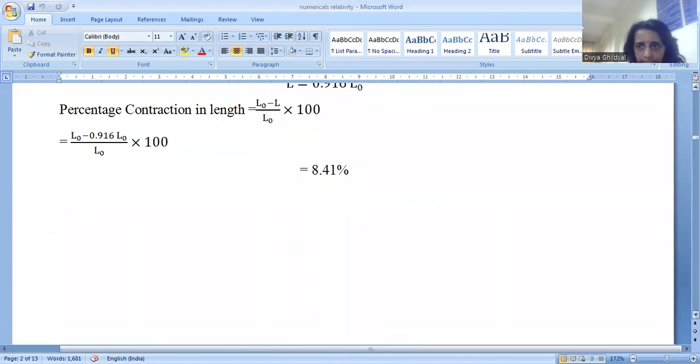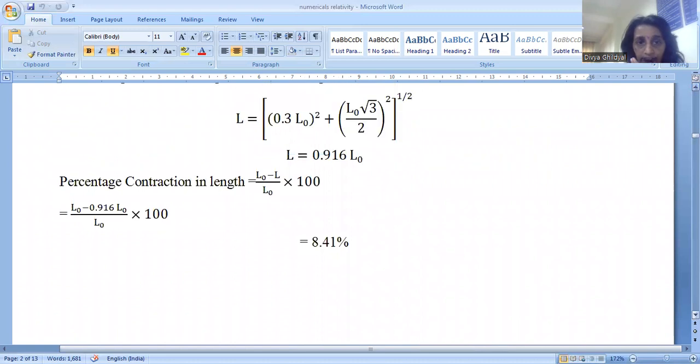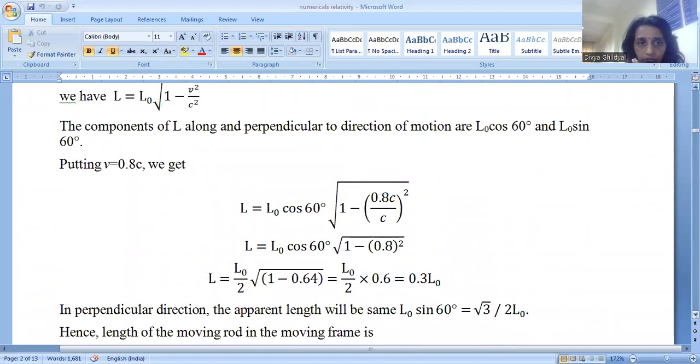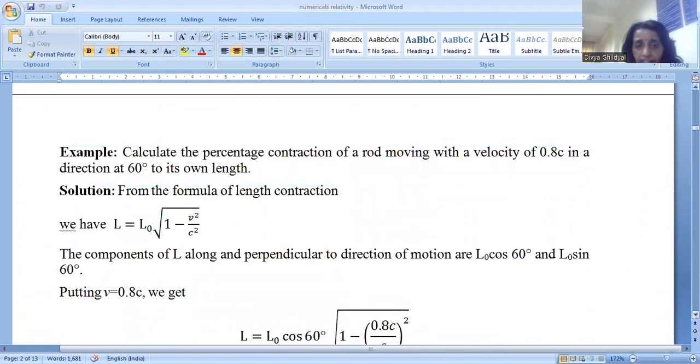This numerical is also very easy. It has been asked in your AKTU exam twice or thrice. Calculate the percentage contraction of a rod moving with a velocity of 0.8c in a direction at 60 degree to its own length.